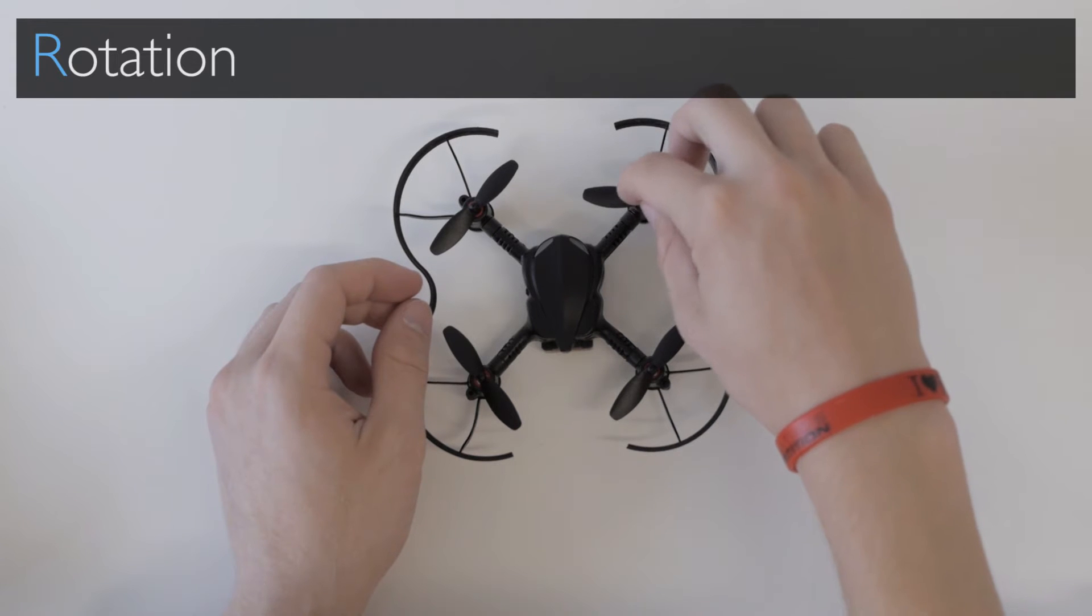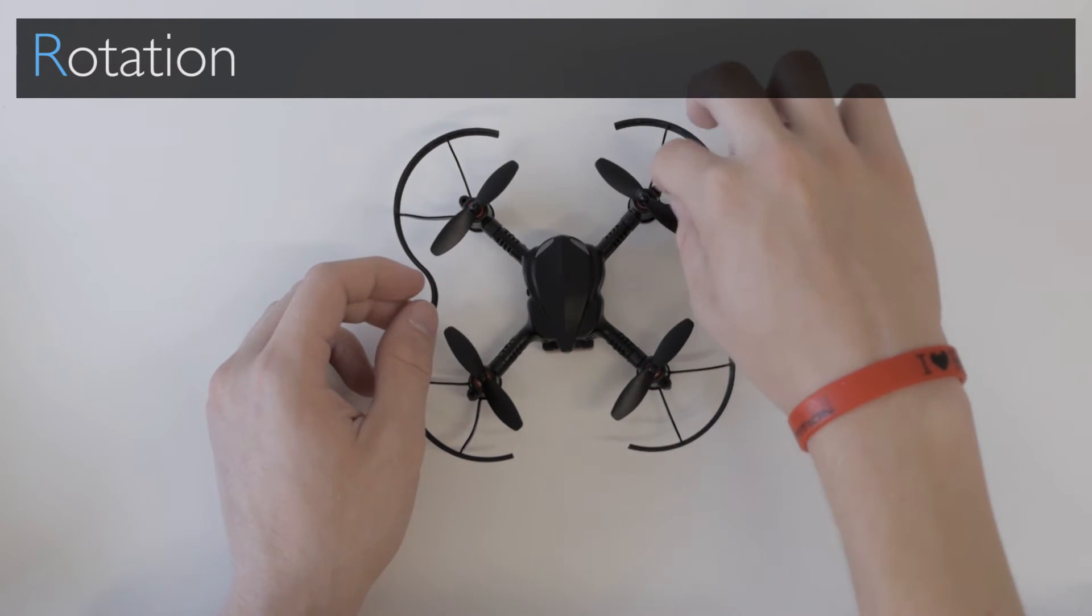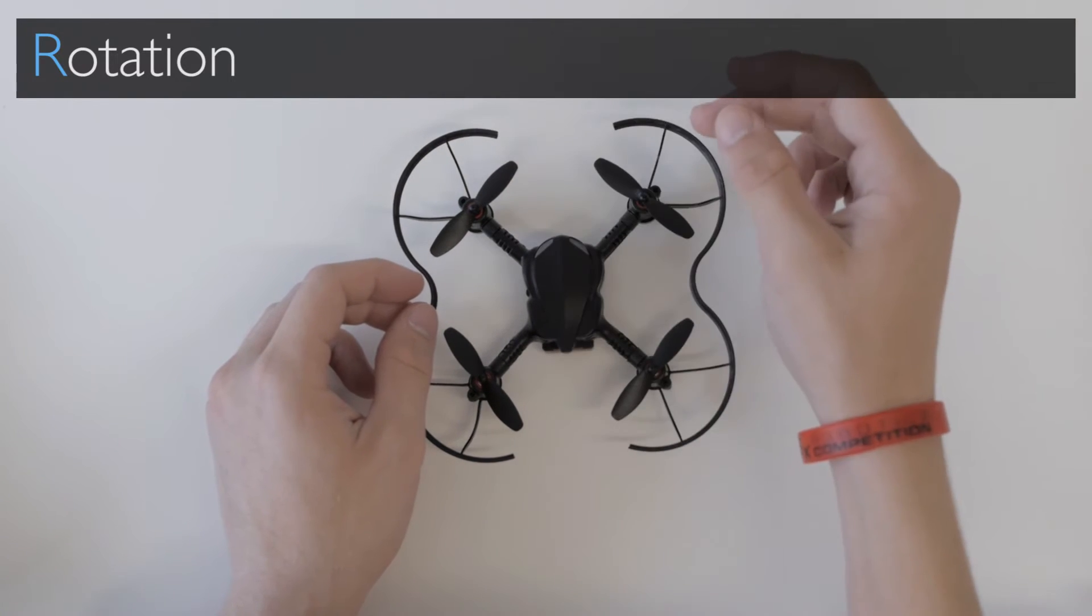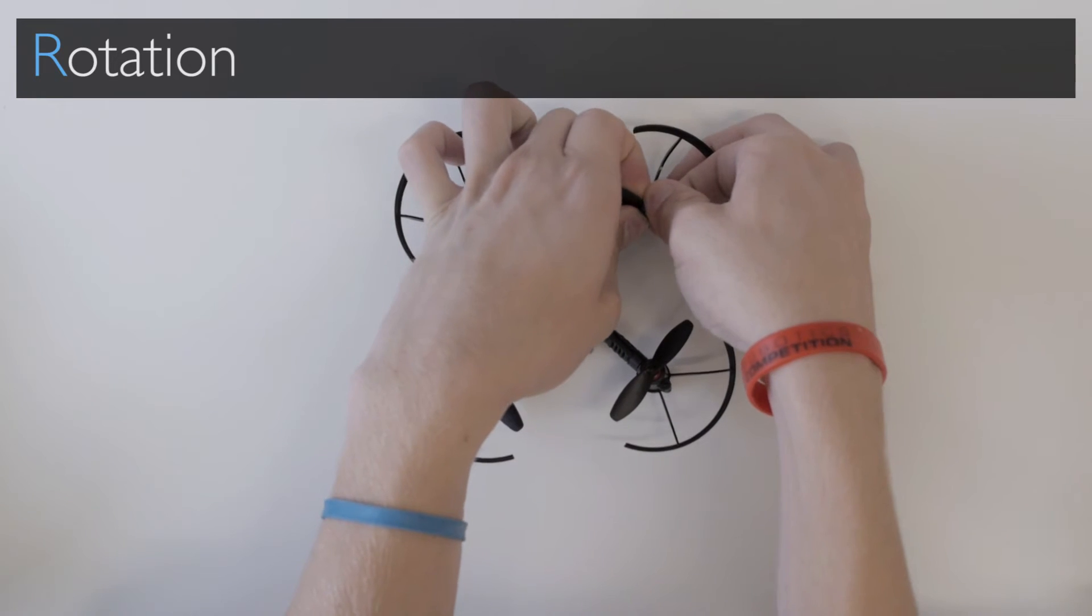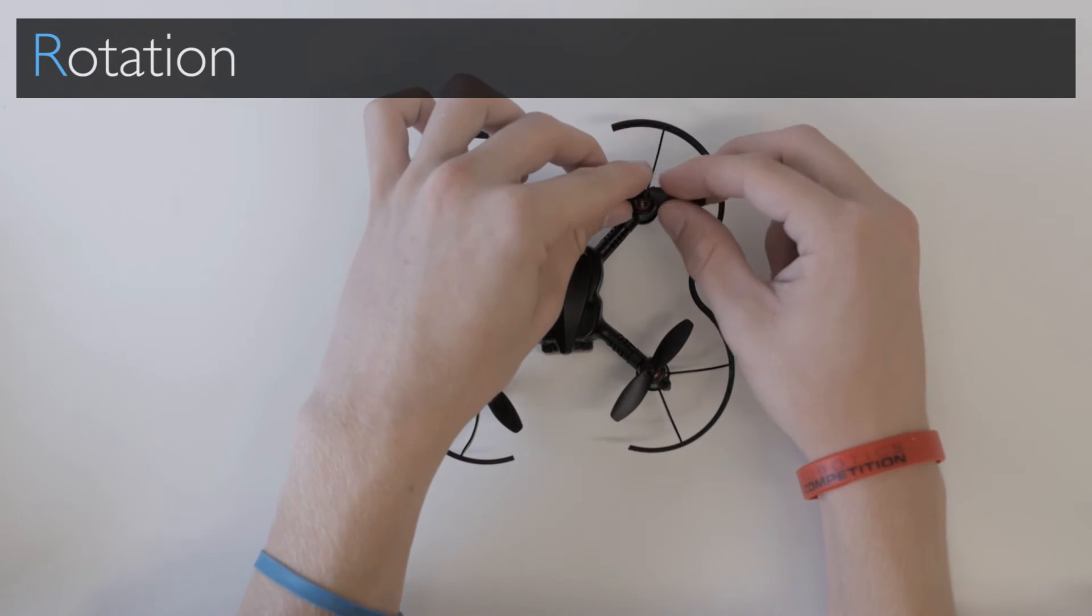And here it looks like we have one that's incorrect because it's pointing away. Actually this side is pointing in towards the drone and we want it to be pointing on that side. So we can pull this off and replace it with one that rotates in the correct direction.